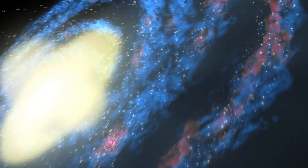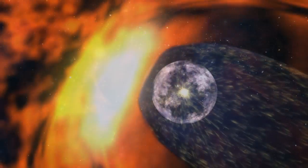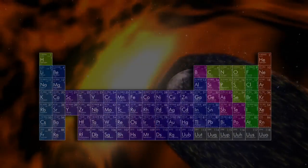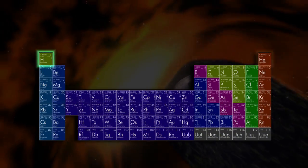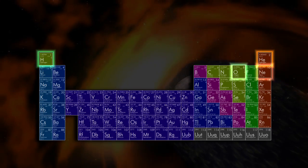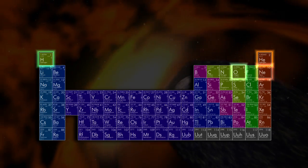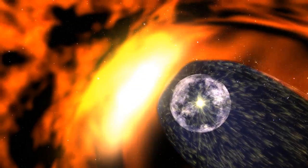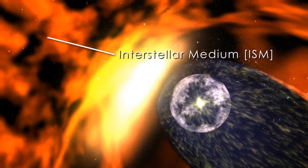Although we can't feel it, our solar system is constantly being changed by galactic wind. The wind is composed of gases like hydrogen, helium, oxygen, and neon, which form a very wispy atmosphere between stars. This gas is called the interstellar medium.